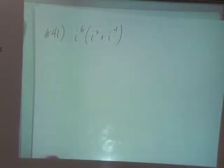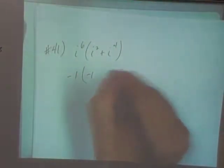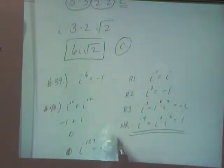Okay, so let's simplify this as much as we can. I to the sixth is a remainder of two, so that's negative one. I squared we know is negative one, and I to the fourth is one.